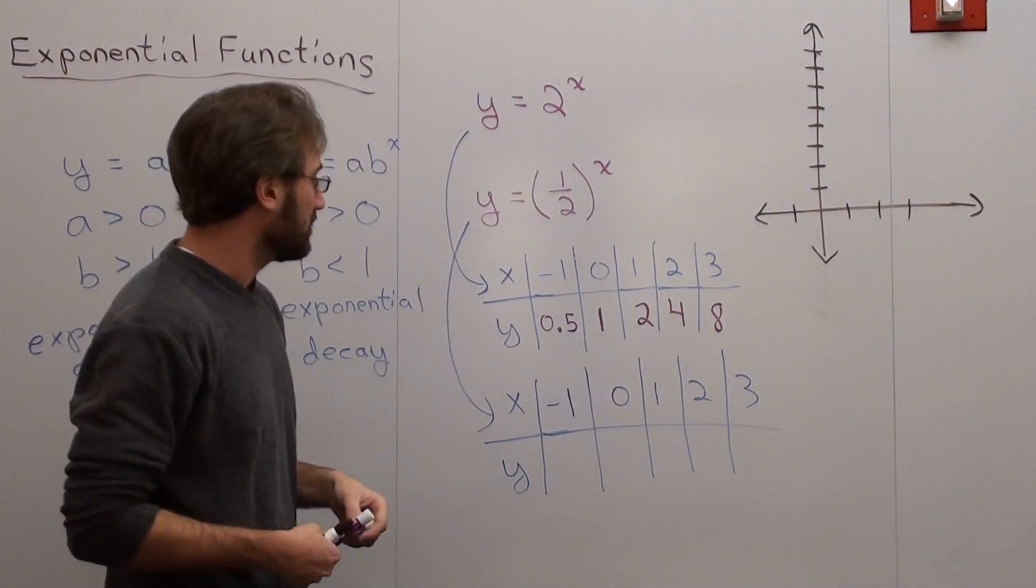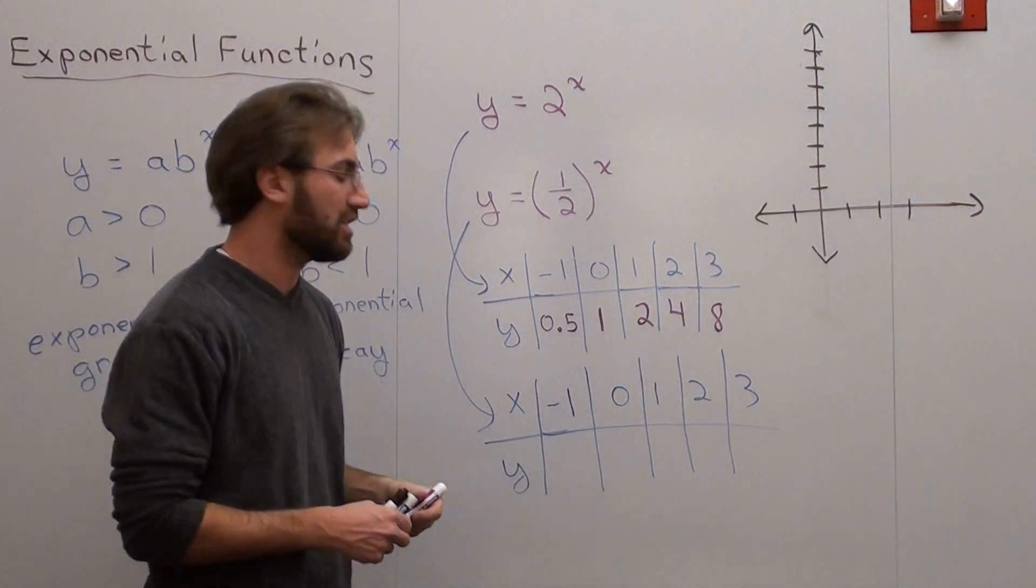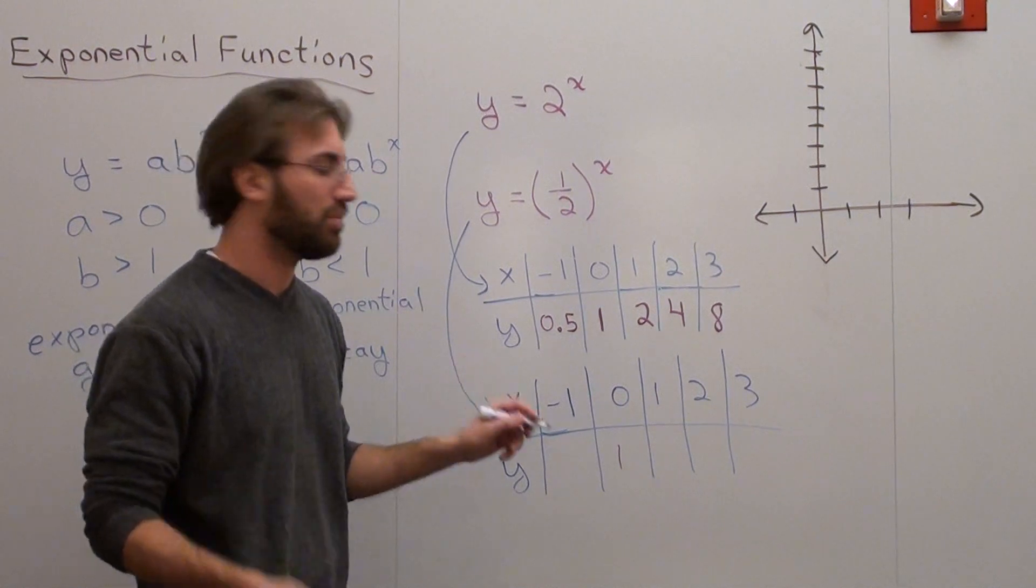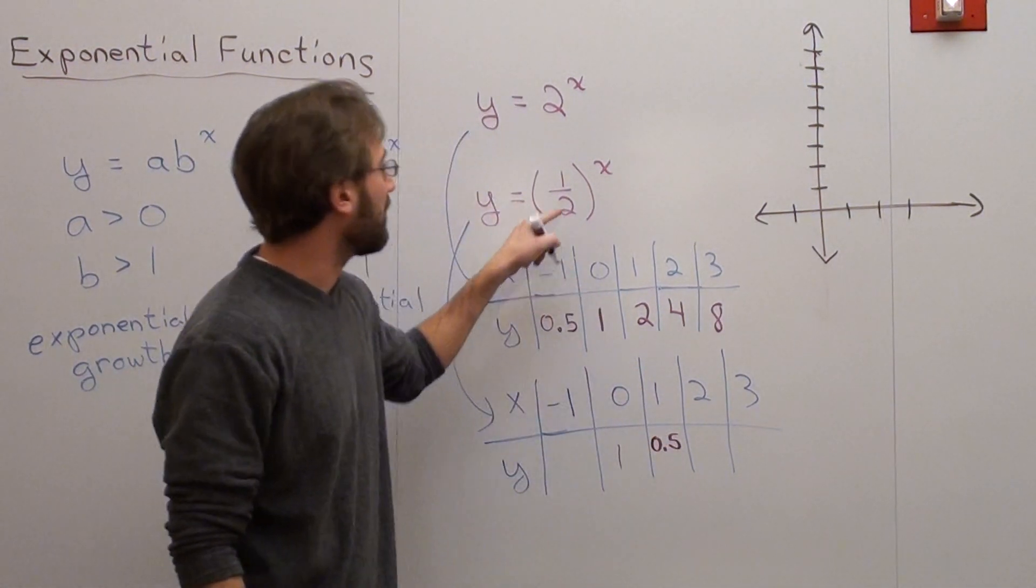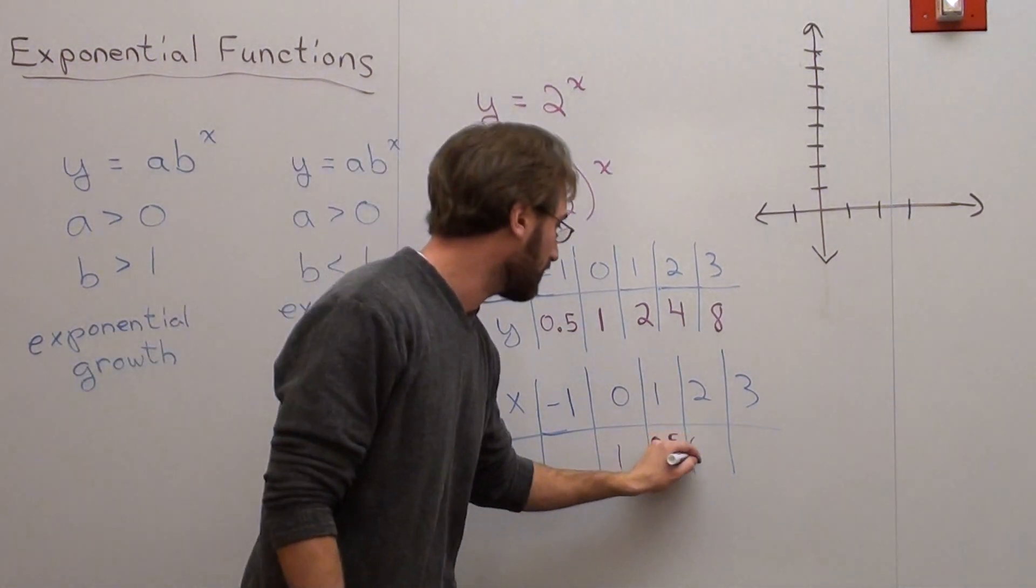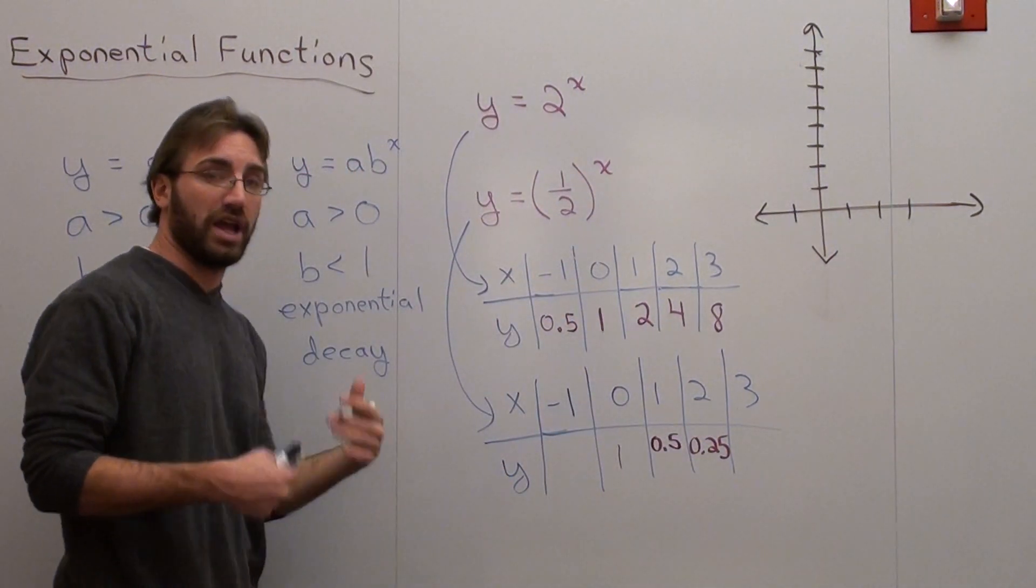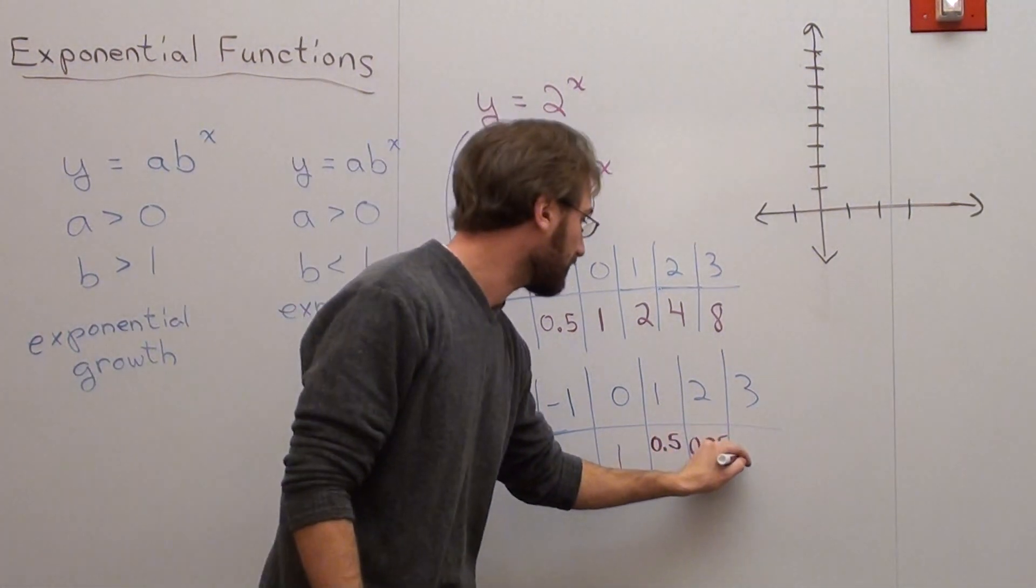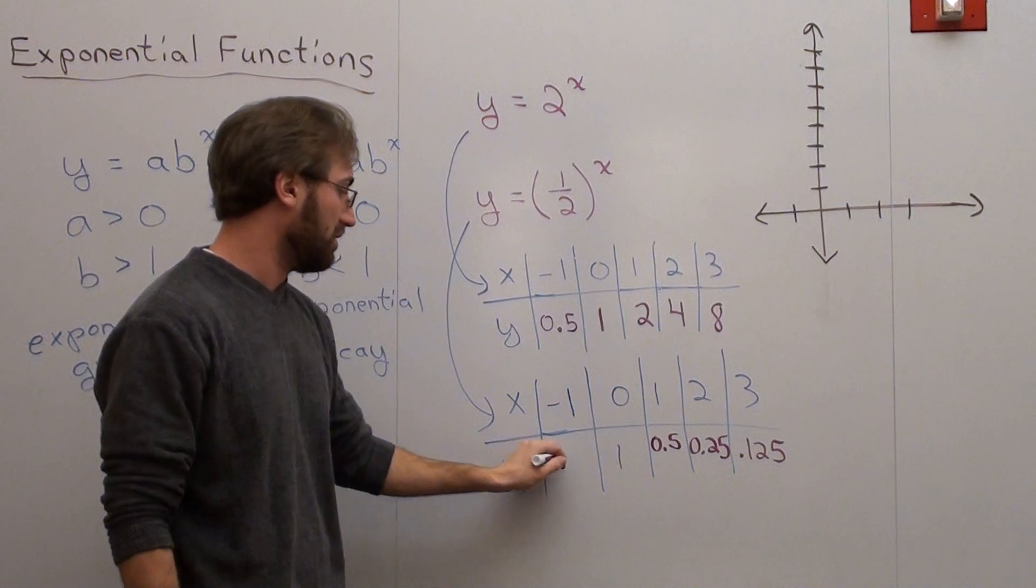I'll do this one in purple. 1 half to the power of 0, that's the easiest one, is 1. 1 half to the power of 1 is 1 half, or 0.5. 1 half to the power of 2 is 1 fourth, or 0.25. And 1 half to the power of 3 is 1 eighth, which is 0.125. 1 half to the power of negative 1 is 2.